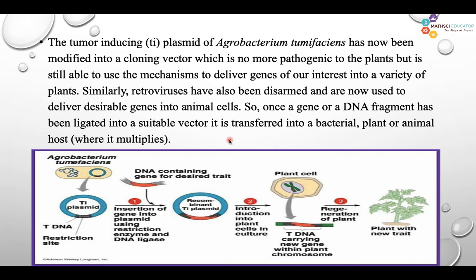Once a gene or DNA fragment has been ligated into a suitable vector, it is transformed into a bacterial, plant, or animal cell. As shown in this figure, this is the Agrobacterium tumefaciens cell that possesses a Ti plasmid, which has the ability to transfer that gene into the plant cell. So we first isolate the Ti plasmid, then create a recombinant by inserting our DNA fragment into that Ti plasmid.